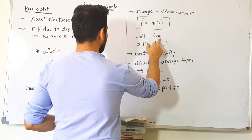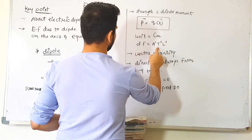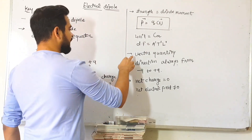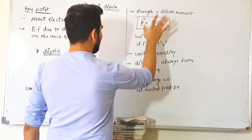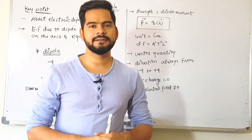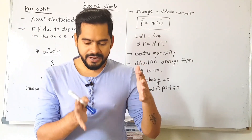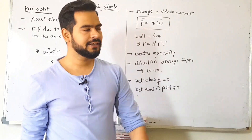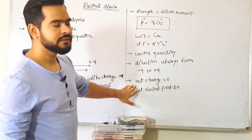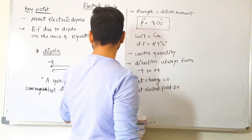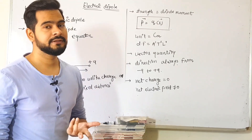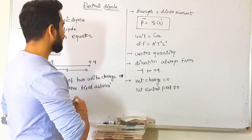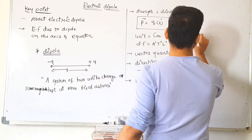The SI unit of dipole moment is coulomb-meter (C·m). Its dimension formula is [A¹L¹T¹]. It is a vector quantity, and its direction is always from negative to positive. So because we move from minus to plus, a vector is assigned to it in that direction. Now, the net charge on any dipole will be zero, because both charges have the same magnitude.